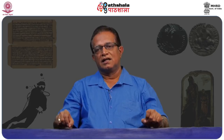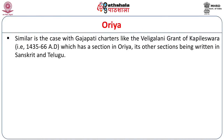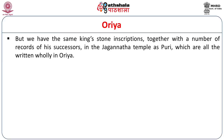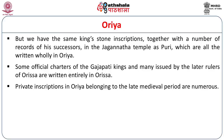All along, they tried to write most of the portions in Sanskrit, which amply proves the pan-Indian character of the Sanskrit language. Similarly, we have the case of Gajapati charters like the Veligalani copper plate of Kapilishwara, which has a section in Orian, its other sections being written in Sanskrit and Telugu. But the same king's stone inscription, together with a number of records of his successors in the Jagannatha temple at Puri, are written wholly in Orian. Some official charters of the Gajapati kings and many issued by later rulers of Orissa are also written entirely in Orian. Private inscriptions in Orian belonging to the late medieval period are numerous.